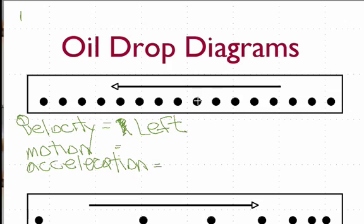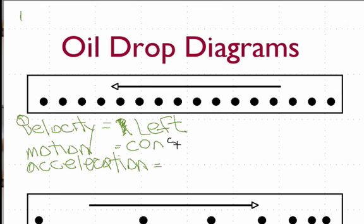Now we look at the spacing and we can see that the distance between each drop is the same all the way across. If the time interval between each drop is the same and the spacing is equal, then the velocity is constant.